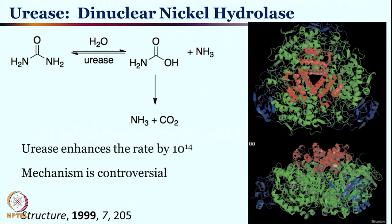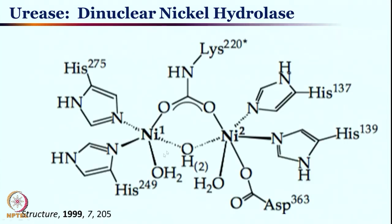Let us take urea and try to make ammonia and carbon dioxide. This is one of the crystal structures — back in 1909, there are many crystal structures from many different sources — all of them telling one thing: this is going to be a dinuclear nickel compound. This one crystal structure shows it is a dinuclear center.